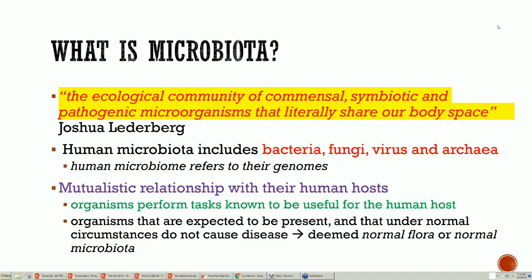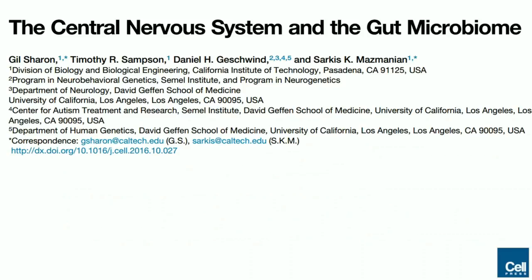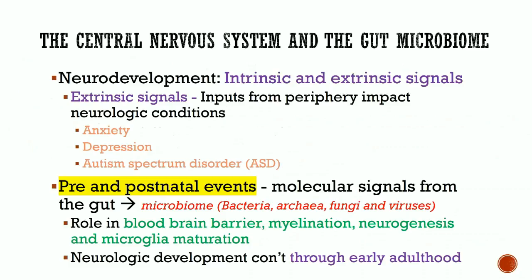But new data suggests that they do. I found a good article in Cell magazine — a summary of the central nervous system and the gut microbiome, published earlier this year. Neurological developments are affected by both intrinsic and extrinsic signals; the extrinsic signals come from the periphery and can impact neurological conditions. Studies have shown they can influence anxiety, depression, and autism spectrum disorders. Pre- and postnatal events involve molecular signals from the gut, specifically from microbiome bacteria, which play a role in blood-brain barrier formation, myelination, neurogenesis, and microglia maturation.